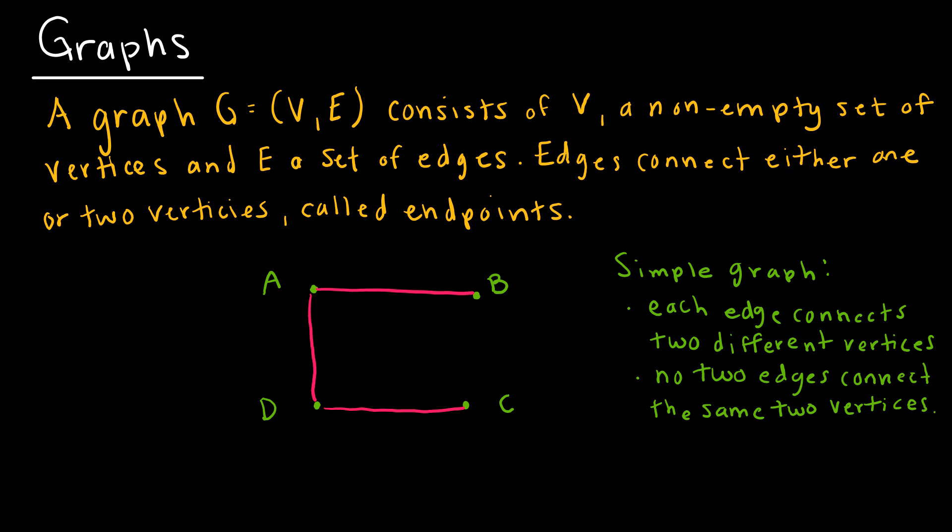So a graph is really just a set of vertices and edges. And vertices cannot be the empty set, which means you have to have at least one vertex for it to be a graph. But edges can be the empty set, because it could be that you have vertices that are not connected.